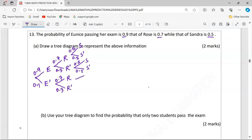We proceed to the next bracket. We can have Sandra passing, Sandra failing. 0.5, 0.5.